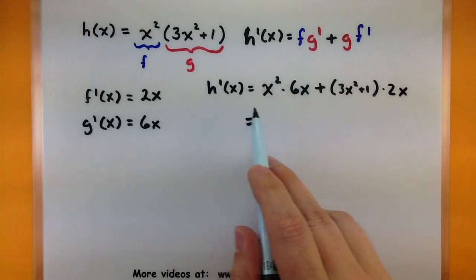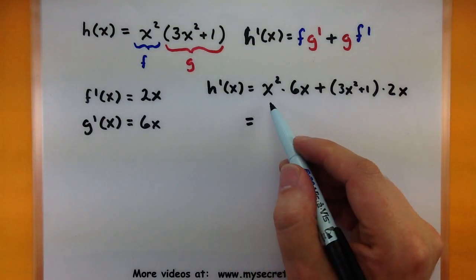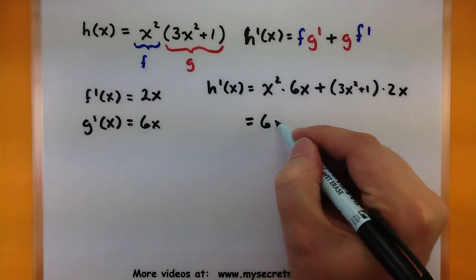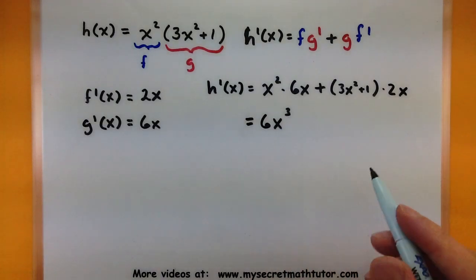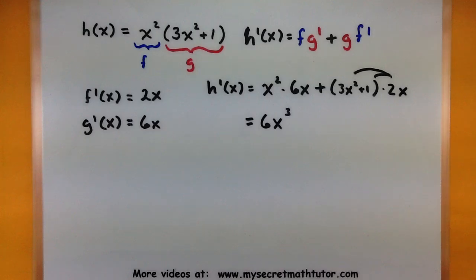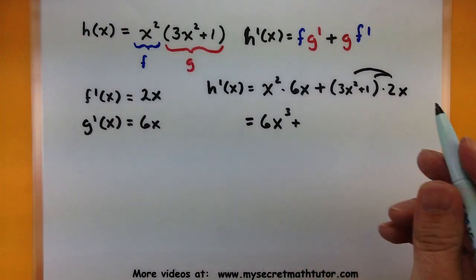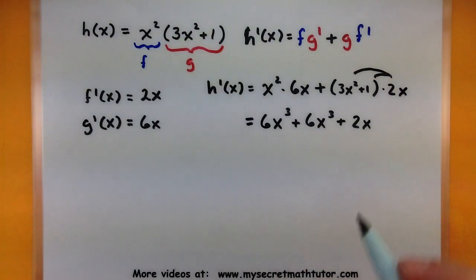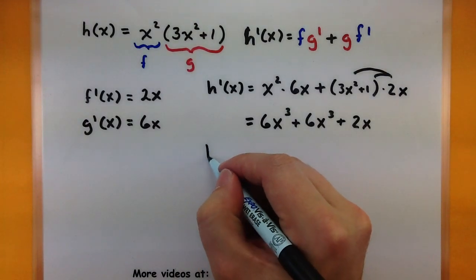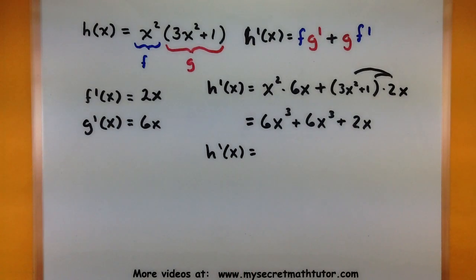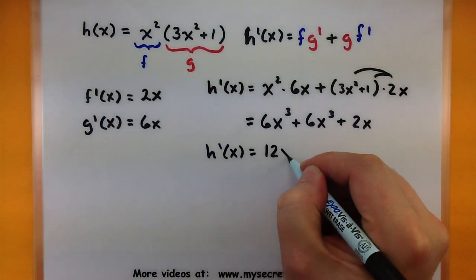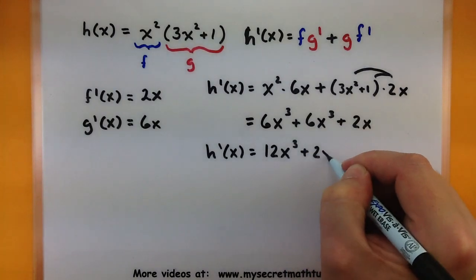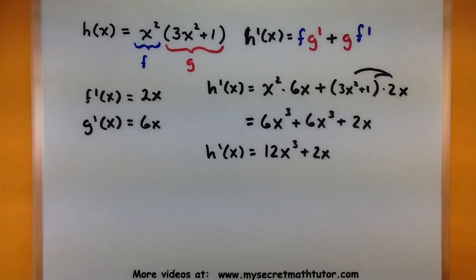Now let's go ahead and simplify. x squared times 6x gives us 6x cubed. Over here we distribute 2x in, giving us plus 6x cubed plus 2x. Just one more simplifying step: the derivative of h is 12x cubed plus 2x. And now this one is done. Let's try another example just to make sure that we know what we're doing.